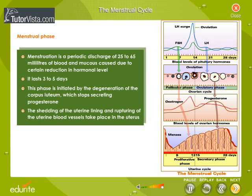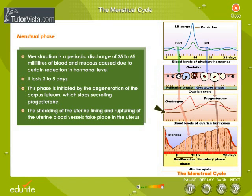Menstrual Phase. Menstruation is a periodic discharge of 25 to 65 milliliters of blood and mucus caused due to a reduction in hormonal level. It lasts three to five days. This phase is initiated by the degeneration of the corpus luteum, which stops secreting progesterone. The shedding of the uterine lining and rupturing of the uterine blood vessels take place in the uterus.